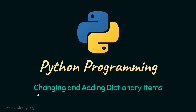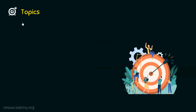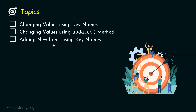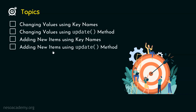In this presentation, we will understand how to change and add dictionary items. The first topic is changing values using key names. The second topic is changing values using the update method. The third topic is adding new items using key names. And the fourth topic is adding new items using the update method.